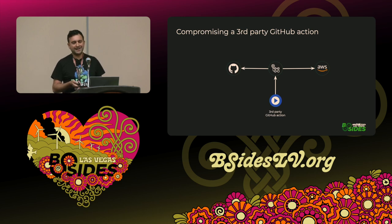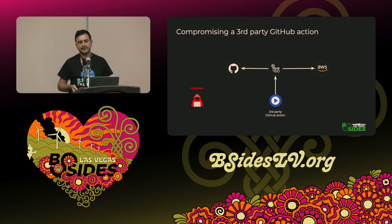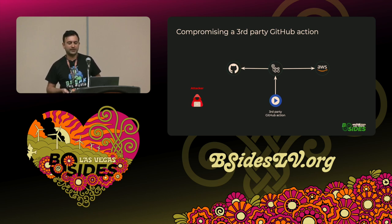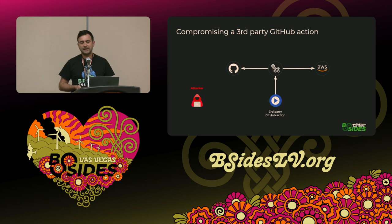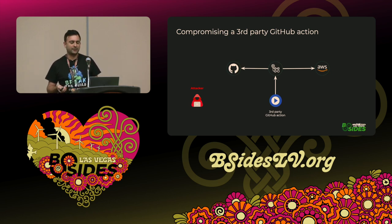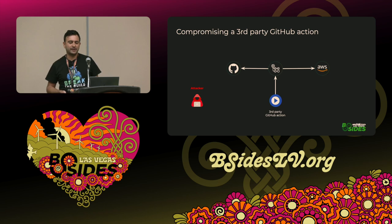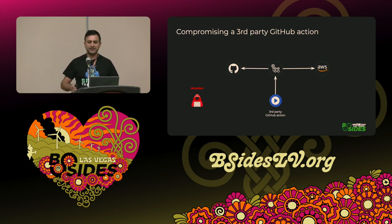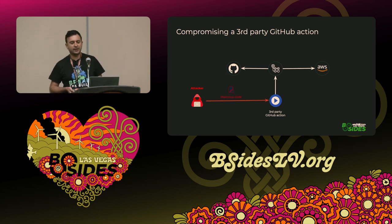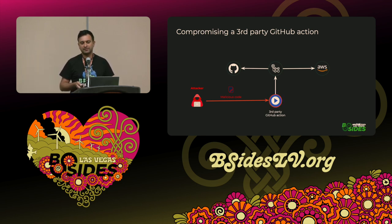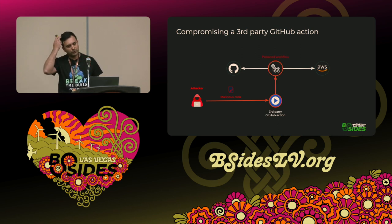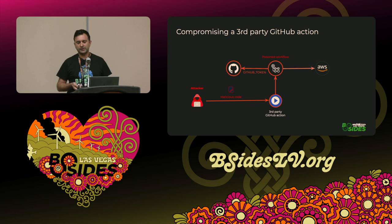Now let's review an attacker trying to compromise a third-party GitHub action. It can happen in attacks like command injection or repo-jacking or many other techniques. My colleague Asi, who sits here in the audience, just gave an awesome talk yesterday about how he managed to take over third-party actions by the thousands — so these things happen all the time. After taking over the third-party GitHub action, the attacker can push new malicious code which will be executed inside the pipeline, poisoning the workflow, and from there reach all the way to the repository or the production environment.